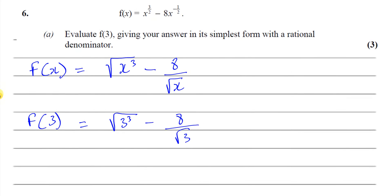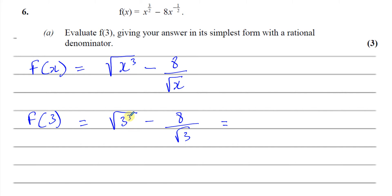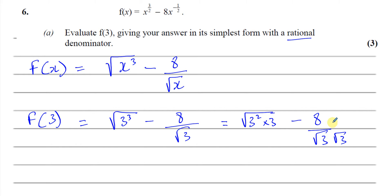We have to write this with a rational denominator. The square root of three cubed is the square root of three squared times three, and I'll take out that squared term separately. For the second term, I'll rationalize the denominator by multiplying numerator and denominator by root three, causing the denominator to become three. So the square root of three squared is three, giving three times root three, minus eight times root three over three.